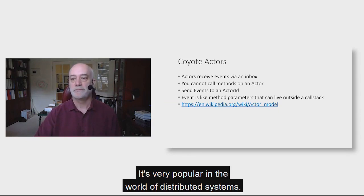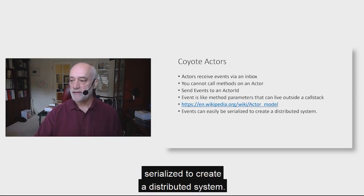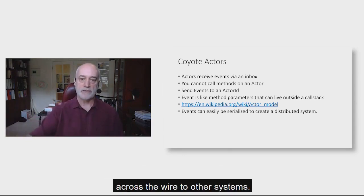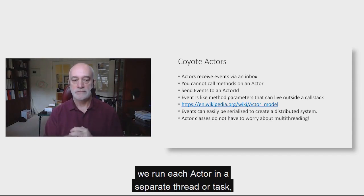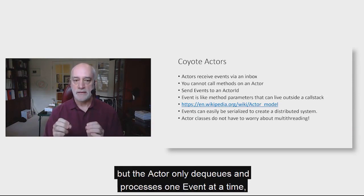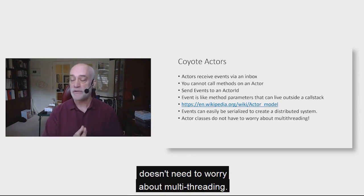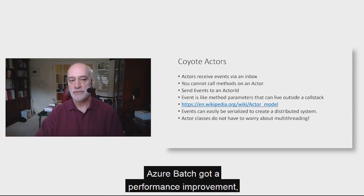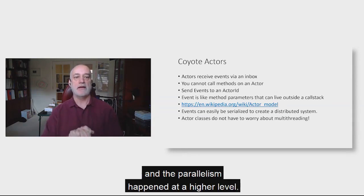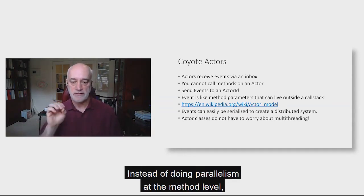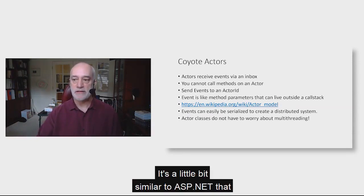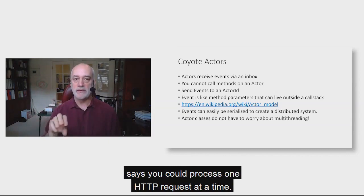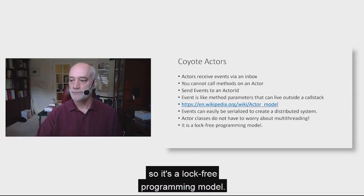Events can also easily be serialized to create a distributed system, going across the wire to other systems. In Coyote, each actor runs in a separate thread or task, but the actor only dequeues and processes one event at a time — which means the actor's internal implementation doesn't need to worry about multithreading. No locks needed. That's why Azure Batch got a performance improvement: they were doing lock-free programming, with parallelism happening at the actor level instead of the method level.